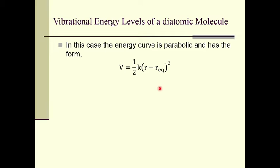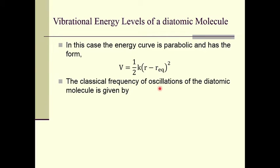The classical frequency of oscillations of the diatomic molecule is given by ν = (1/2π)√(k/μ). This is the classical frequency of the simple harmonic oscillator. So far we have seen the classical picture of what physics tells us about the simple harmonic oscillator.